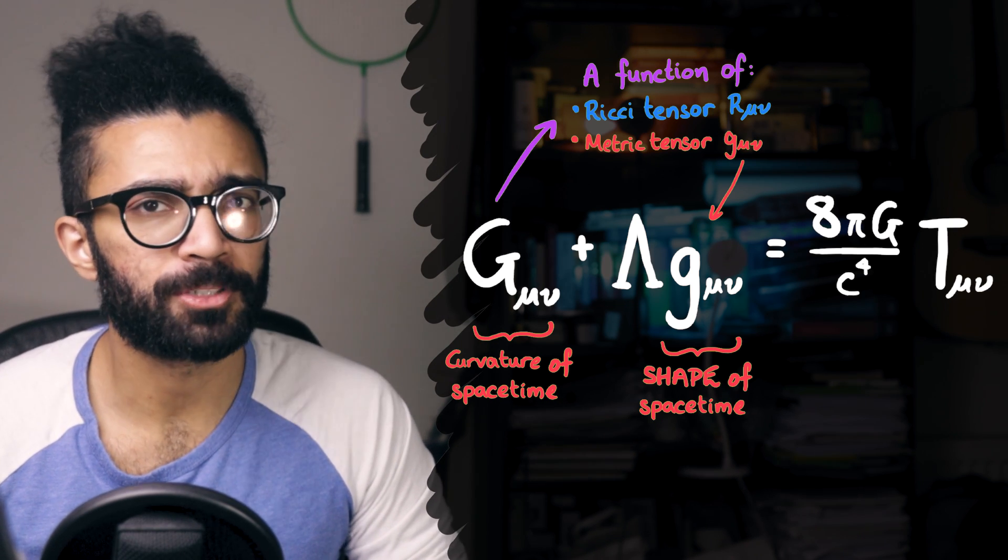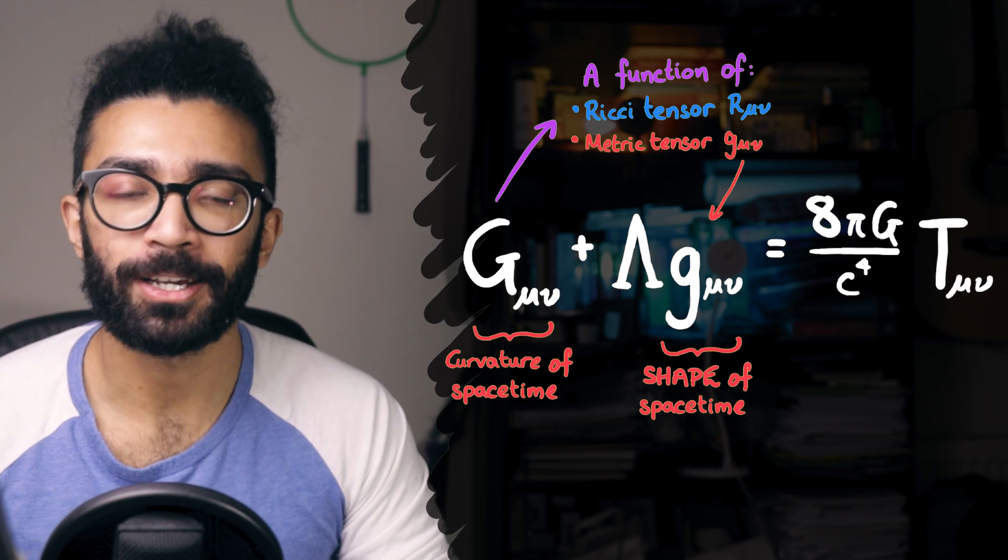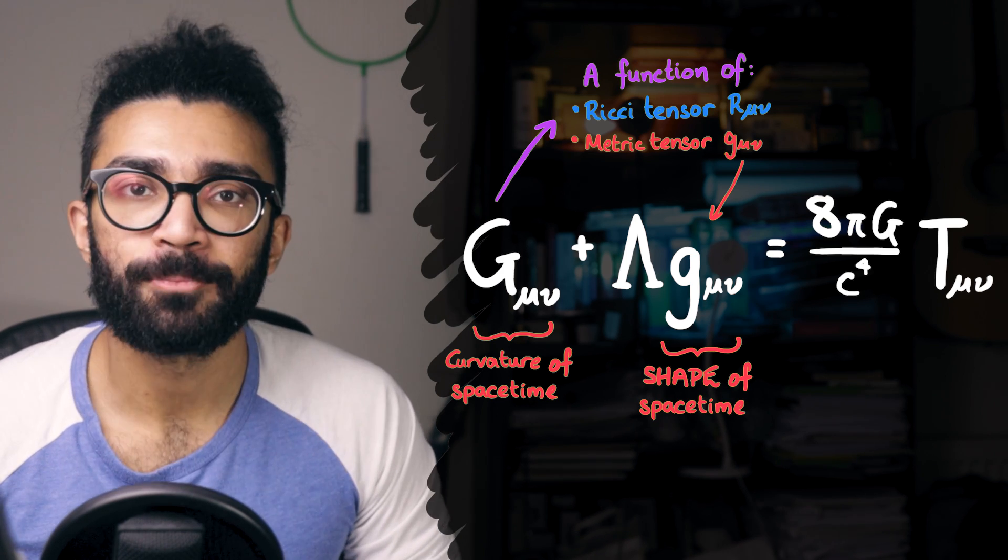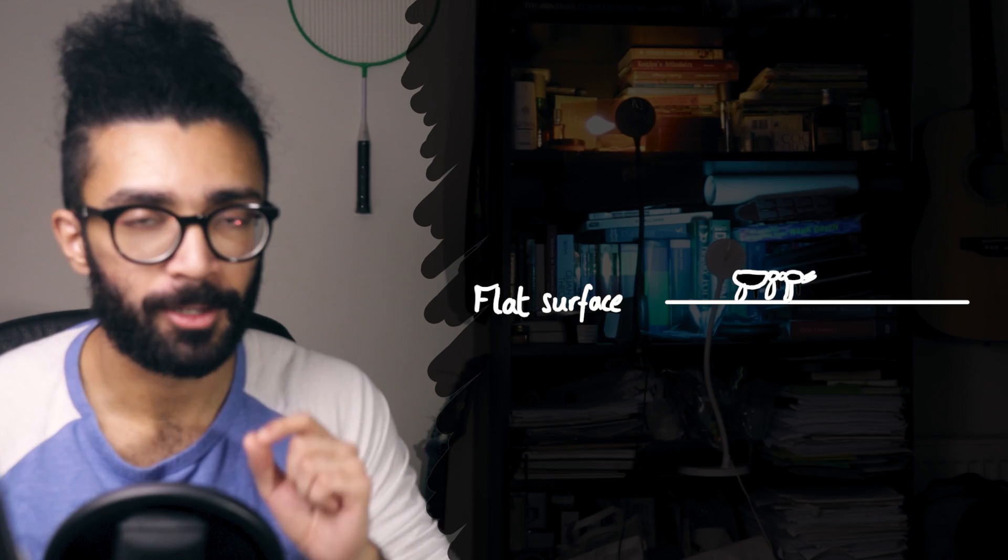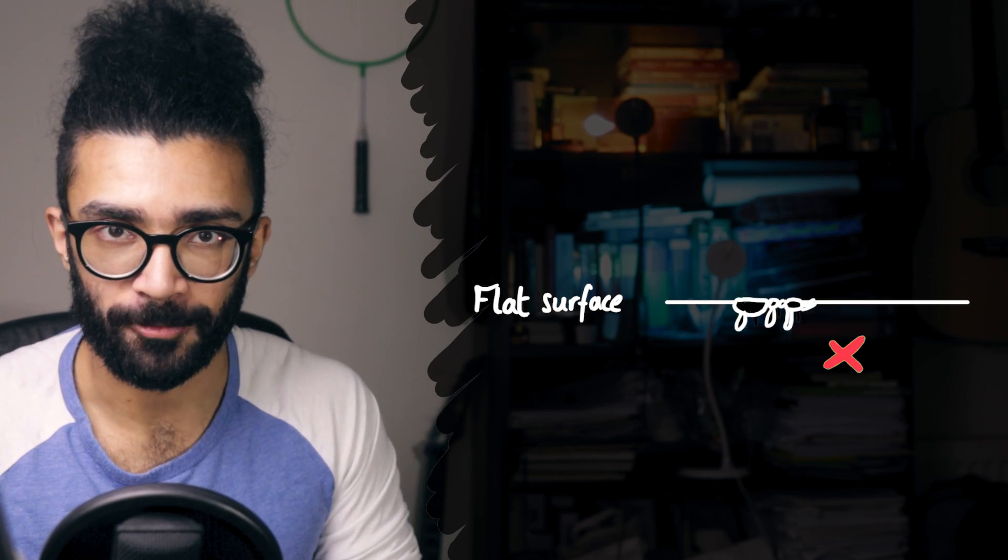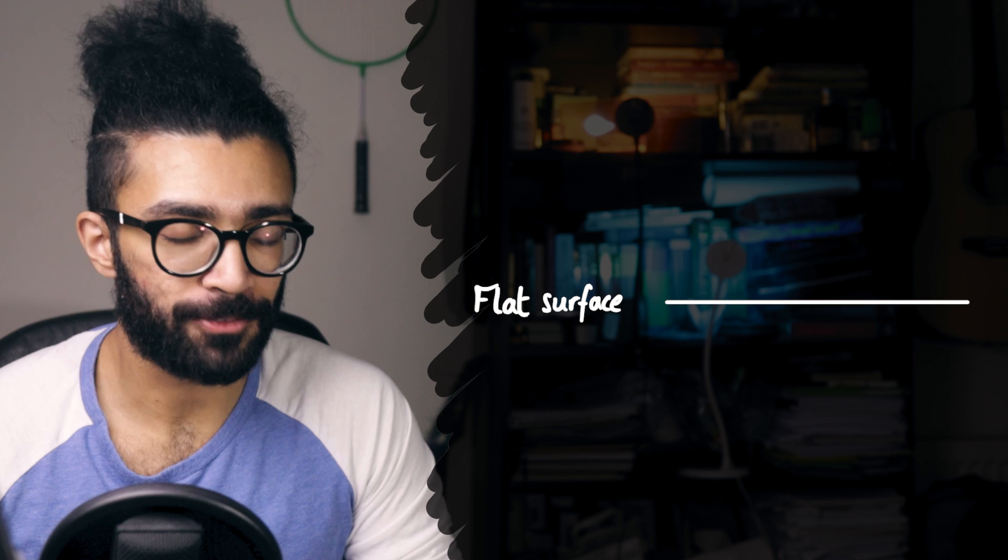And again, it's a tricky concept to cover in a video that's not about the metric tensor, but let's think about it like this. Let's imagine an ant can live on a two-dimensional surface, a flat plane. It can move forward and backward, or left and right, but it's not allowed to move up or down. Now, we label two points on this flat surface, points A and B.